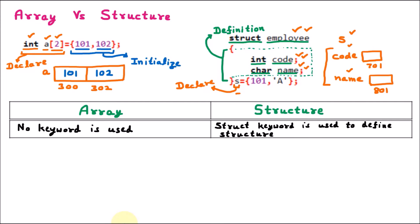After declaration, we provide the values. First we provide 101, so inside 'code' the value 101 is stored. The second value is 'A', which is a character, and that is provided inside 'name'. This part is called initialization — providing the value.